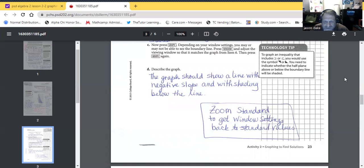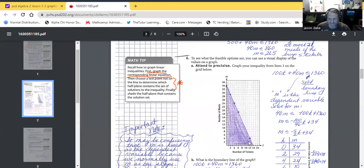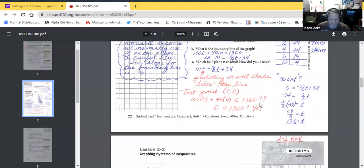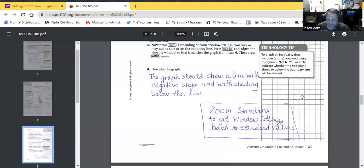So we're going to skip C. Actually C, now press graph. Depending on your window settings, you may or may not be able to see the boundary line. Press window and adjust the viewing window so that it matches the graph from item 6, then press the graph again. D, describe the graph. The graph should show a line with negative slope and with shading below the line. Zoom standard to get window settings back to standard values.